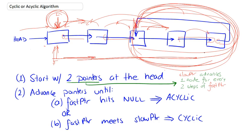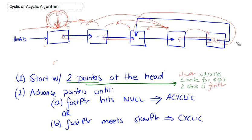And the first time you actually meet it, we're going to declare the list to be cyclic. So this is our approach. So we use two pointers for that approach.